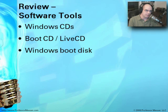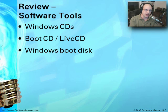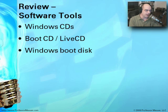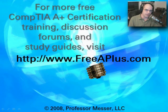In review, here are the three types of software tools to have available for preventive maintenance or system work: First, the Windows CD that came with the system, matching the version of Windows in the local environment. Second, boot CDs or live CDs — and the Ultimate Boot CD is a great place to start. Third, Windows pre-installation environments you can boot from, such as Microsoft's Windows PE or BartPE. For more A-plus certification videos, visit FreeAplus.com.